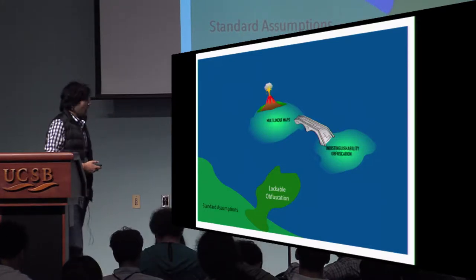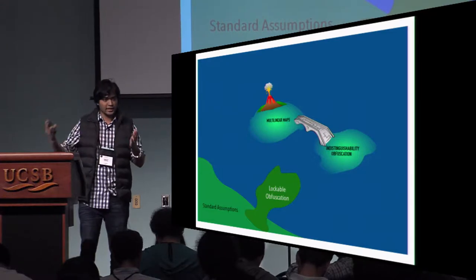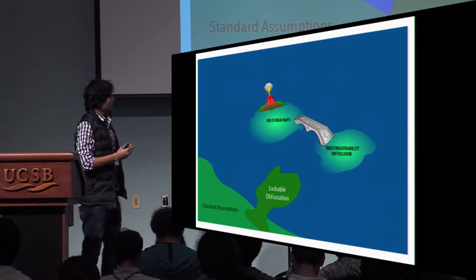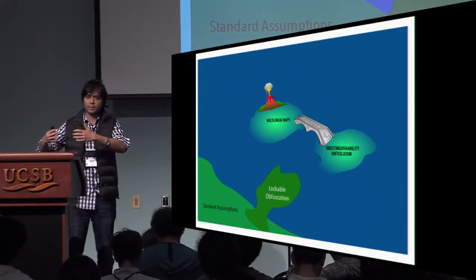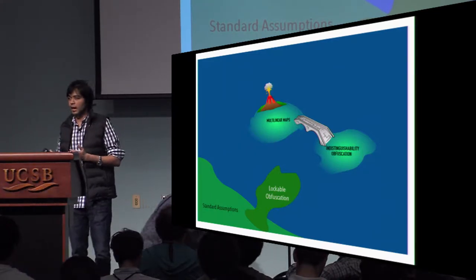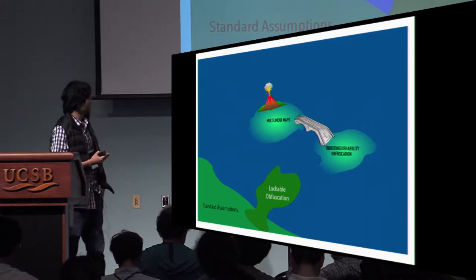Now as it turns out, the power of indistinguishability obfuscation has been exposed, but we don't have any constructions of I.O. from standard assumptions. All the constructions of I.O. are mostly built upon what's called multi-linear maps. And as it turns out, multi-linear maps have attacks, and we have seen a steady stream of cryptanalysis on multi-linear maps.